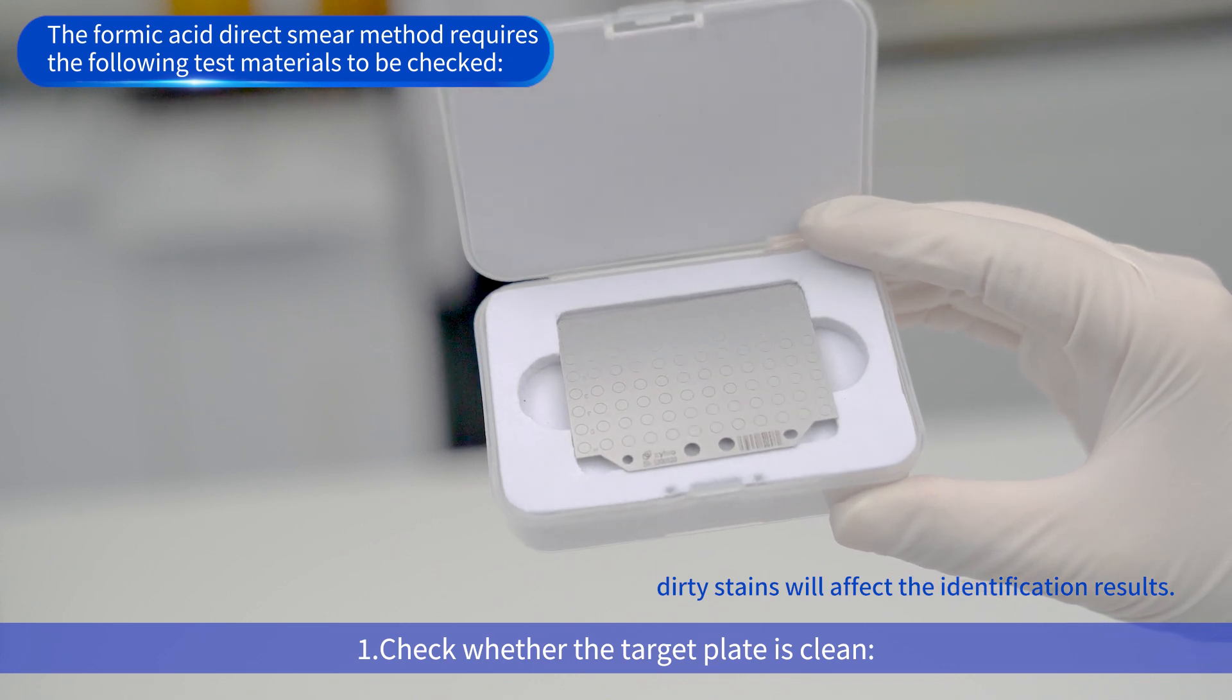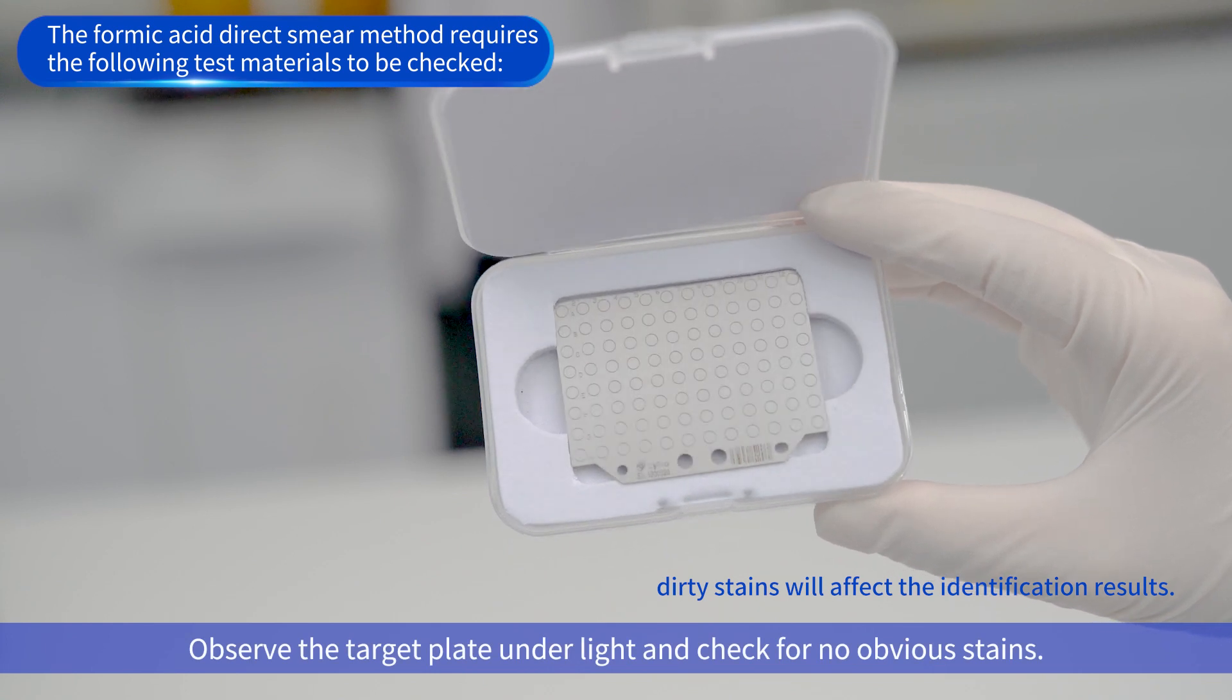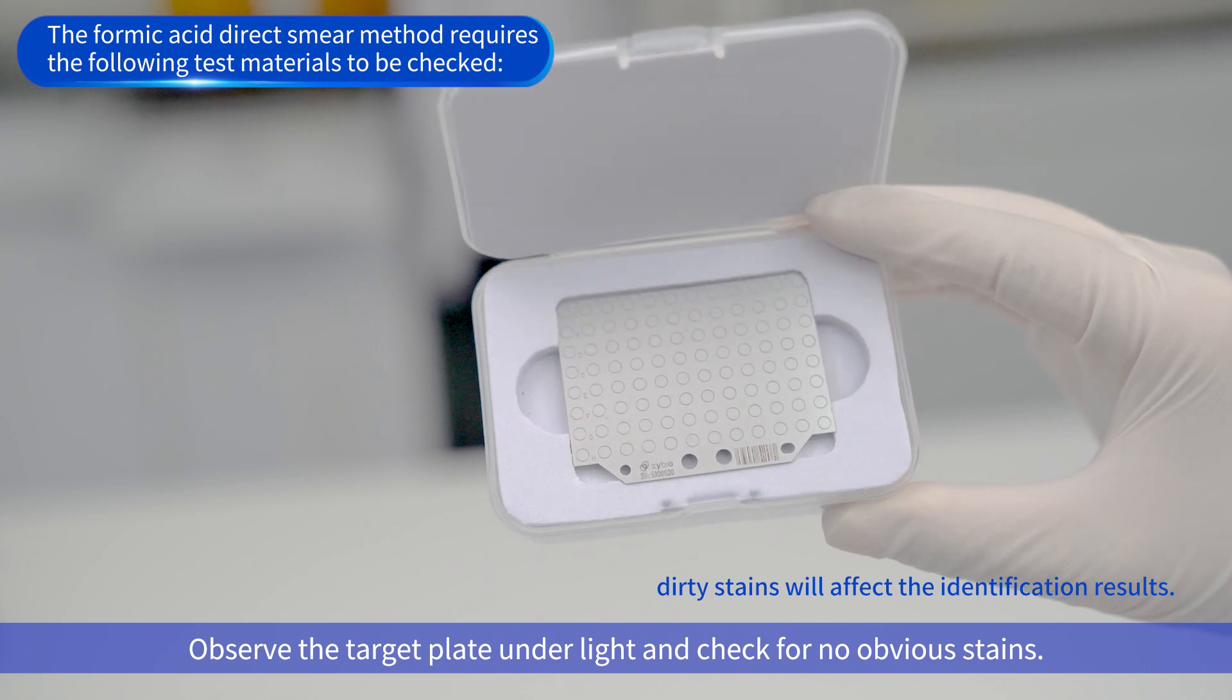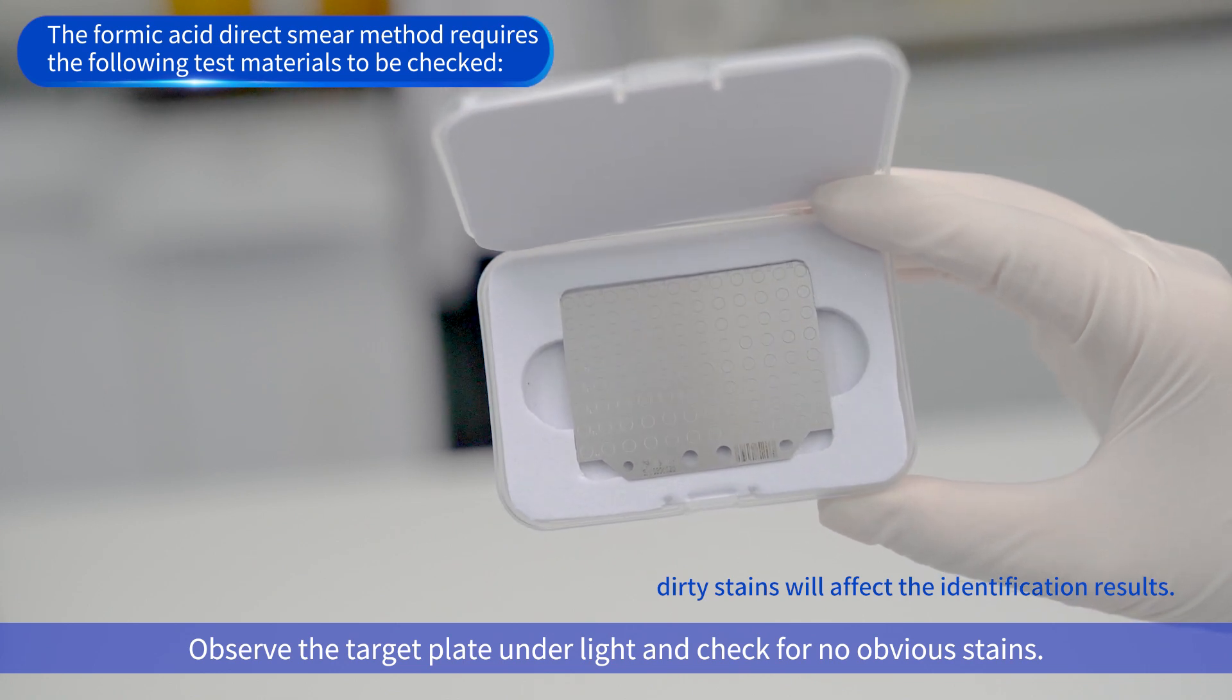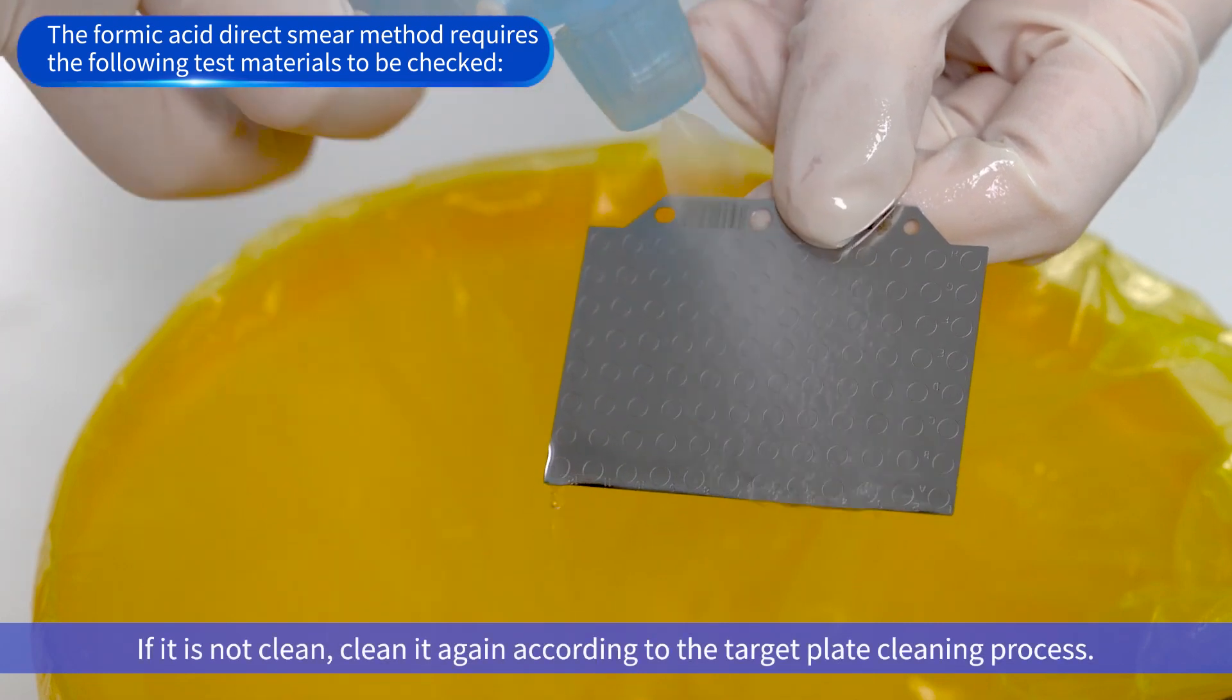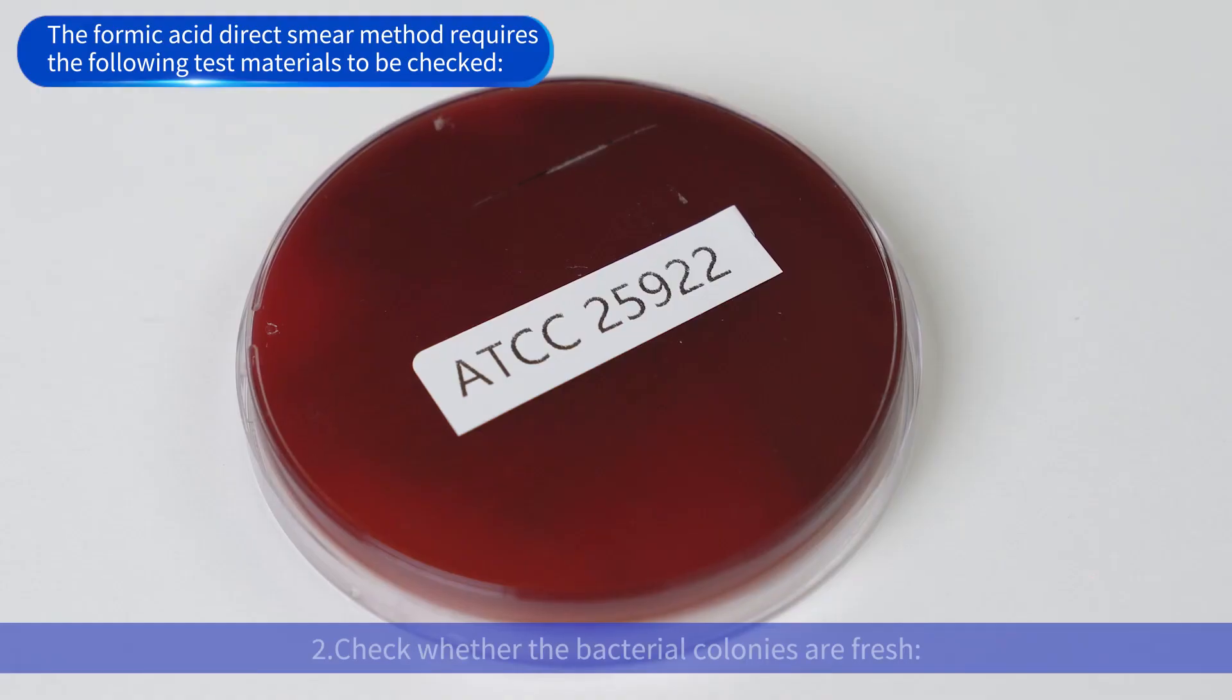The formic acid direct smear method requires the following test materials to be checked. First, check whether the target plate is clean. Observe the target plate under light and check for no obvious stains. Dirty stains will affect the identification result. If it is not clean, clean it again according to the target plate cleaning process.